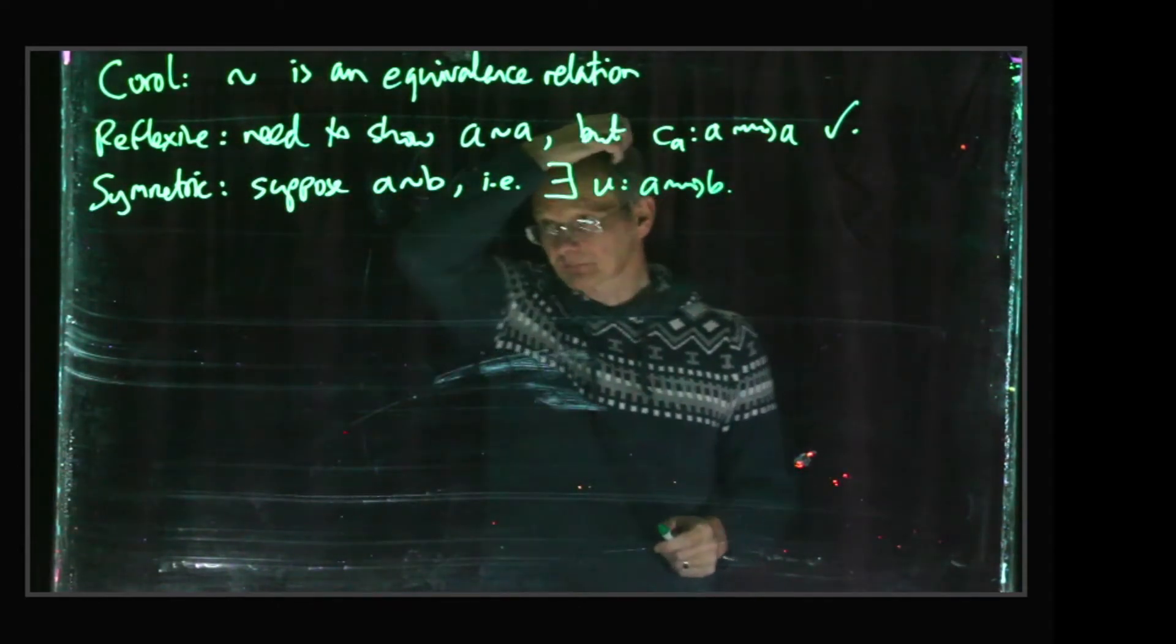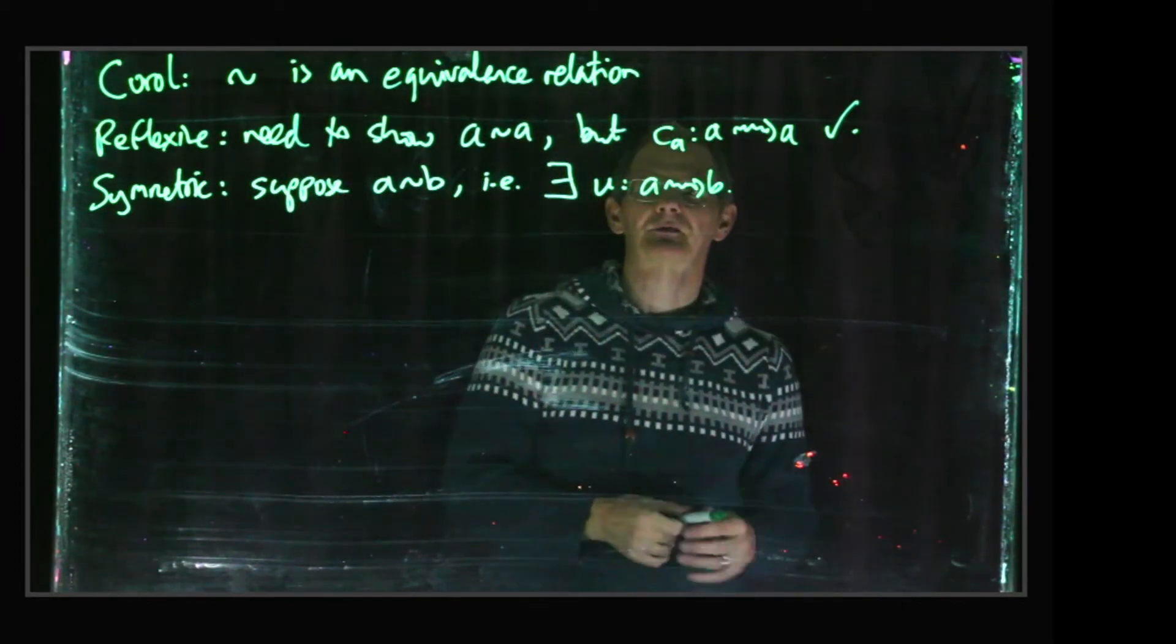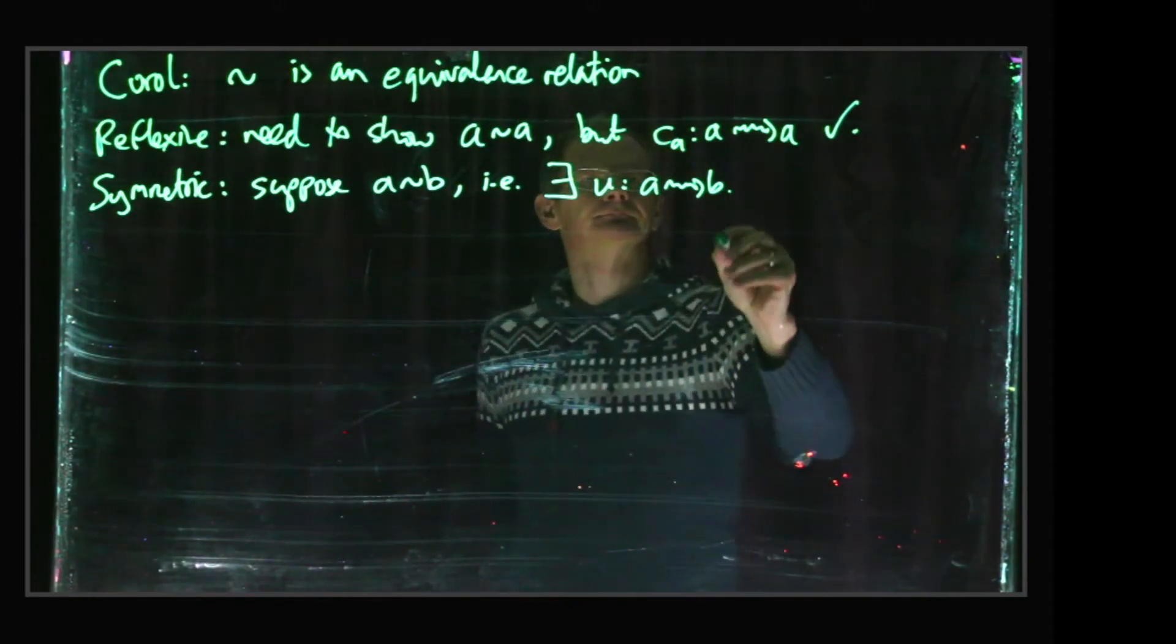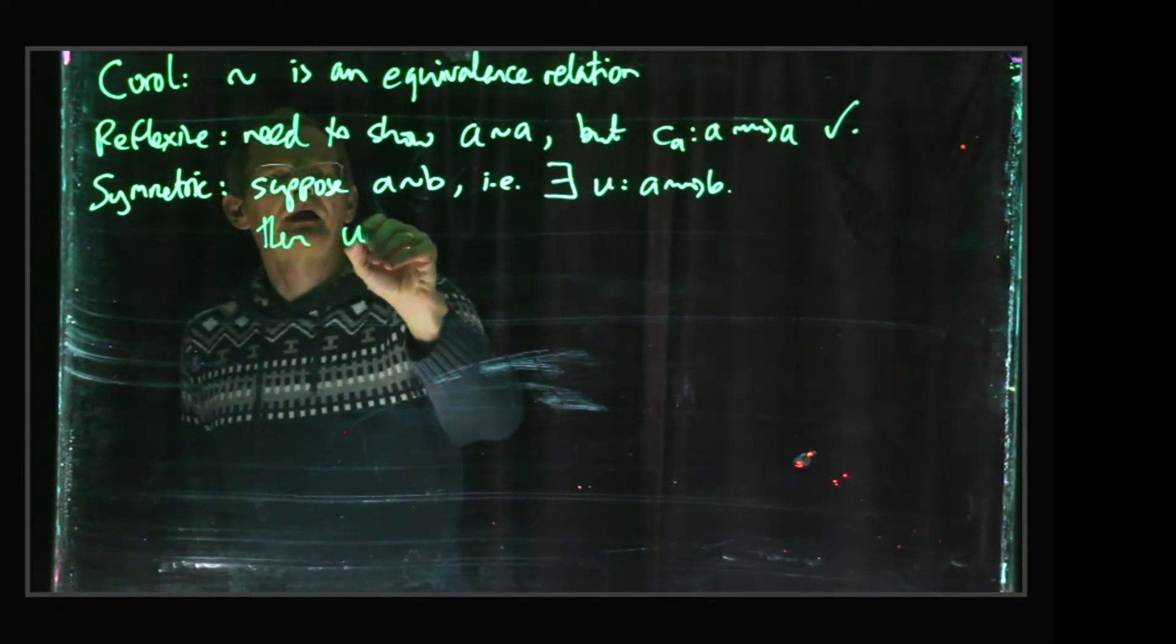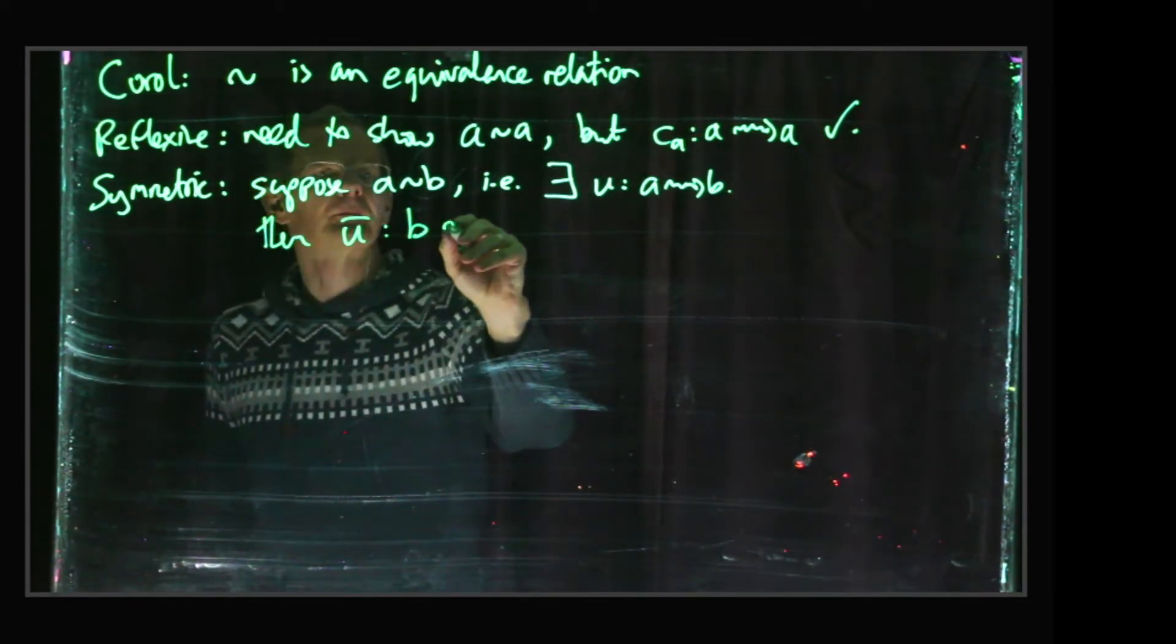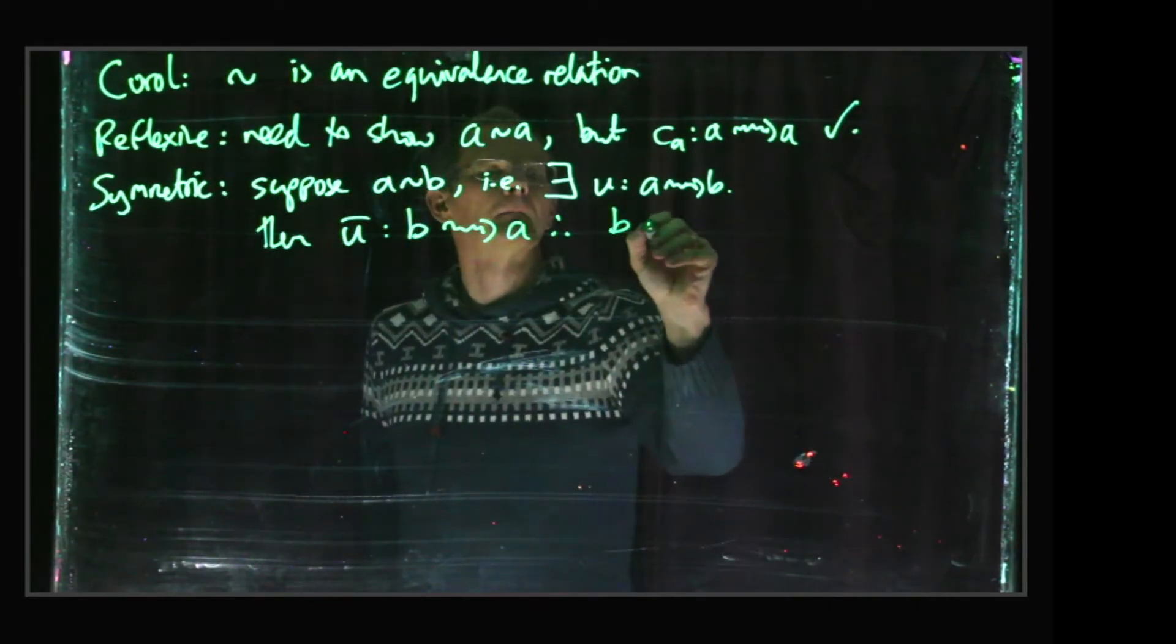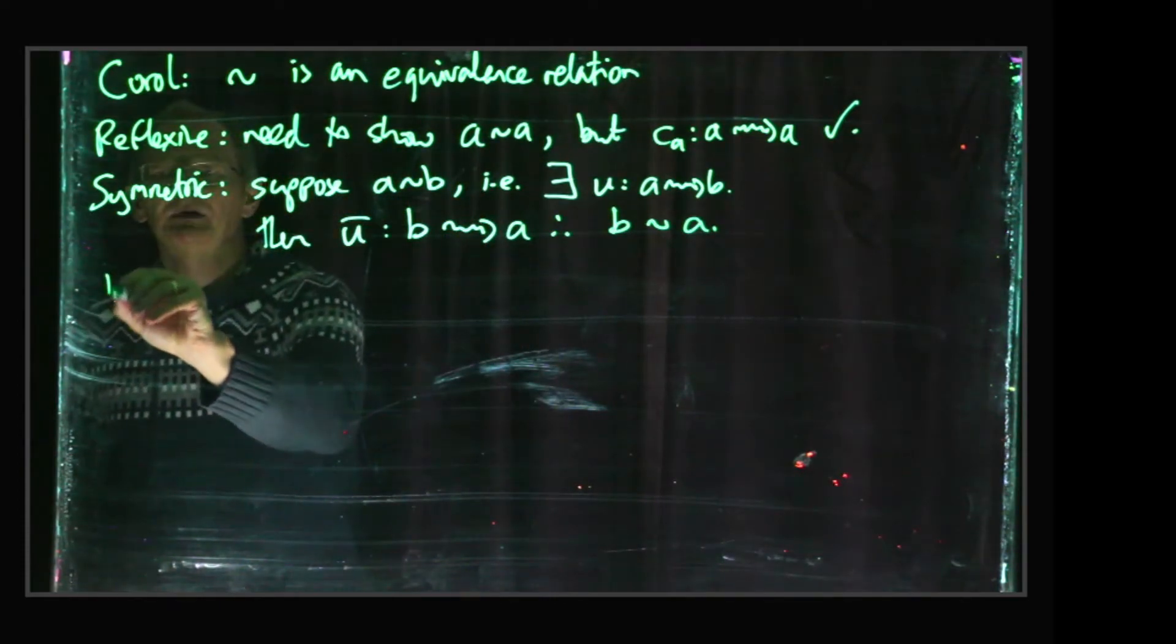So now we need to prove symmetry, right, suppose that A is related to B, we need to show that B is related to A. But what does it mean to say A is related to B? It means that there's a path from A to B. But then ū was a path from B to A, so B is related to A, so that proves that the relation is symmetric, and similarly transitivity.